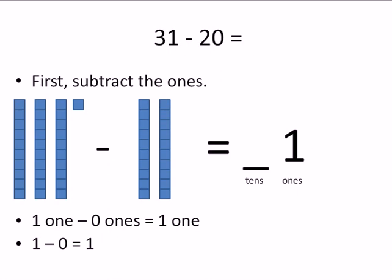So we have one one minus zero ones equals one one. One minus zero equals one. Nice and easy. So I wrote one over the one spot in our answer.